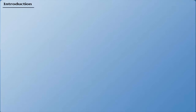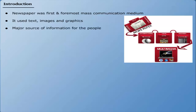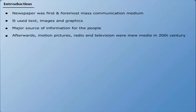Introduction. Newspaper was the first and foremost mass communication medium because it mainly used text, images and graphics. It was the major source of information for the people. Afterwards, motion pictures, radio and television were the major and significant new media till the 20th century. This entire new media changed the whole world of mass communication.